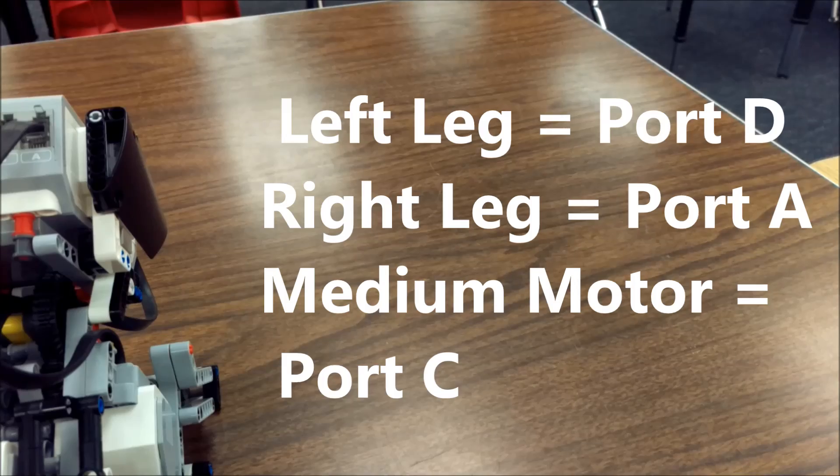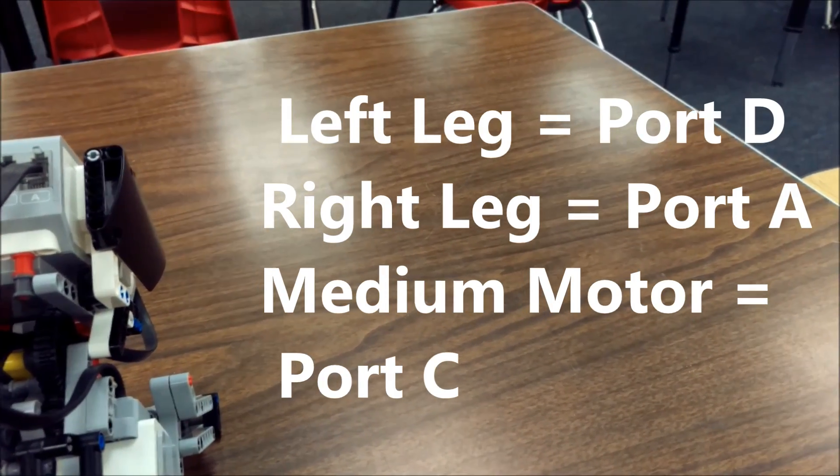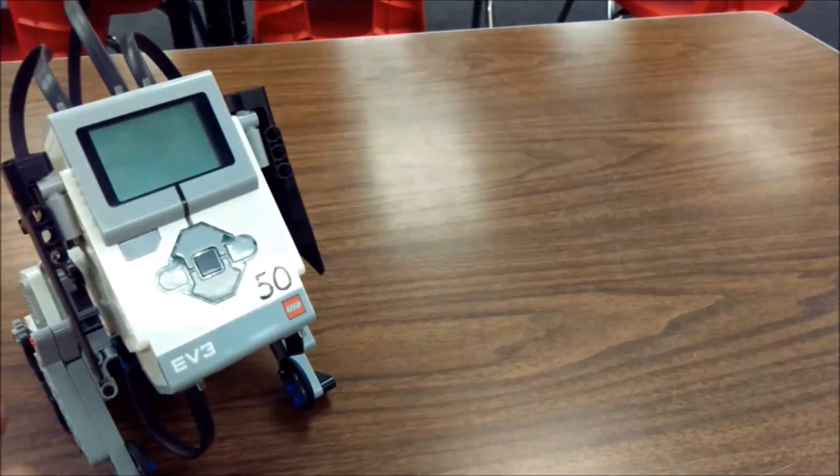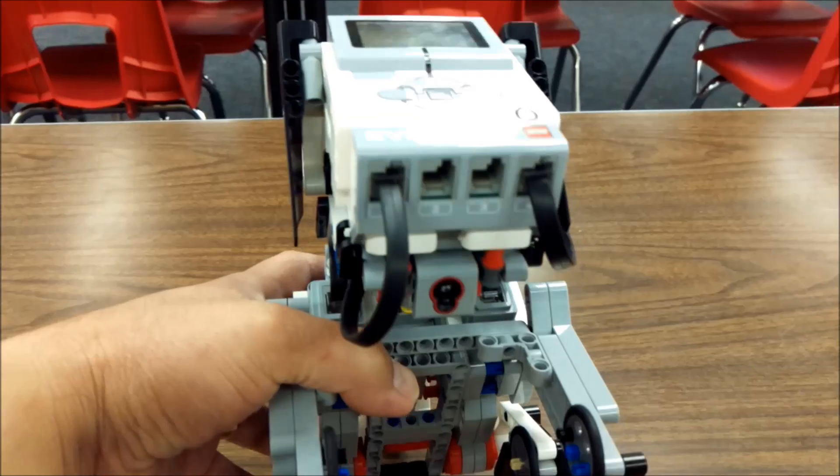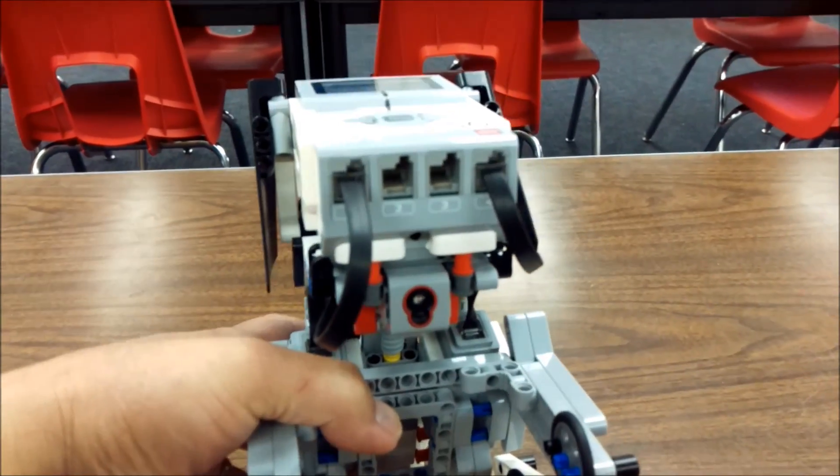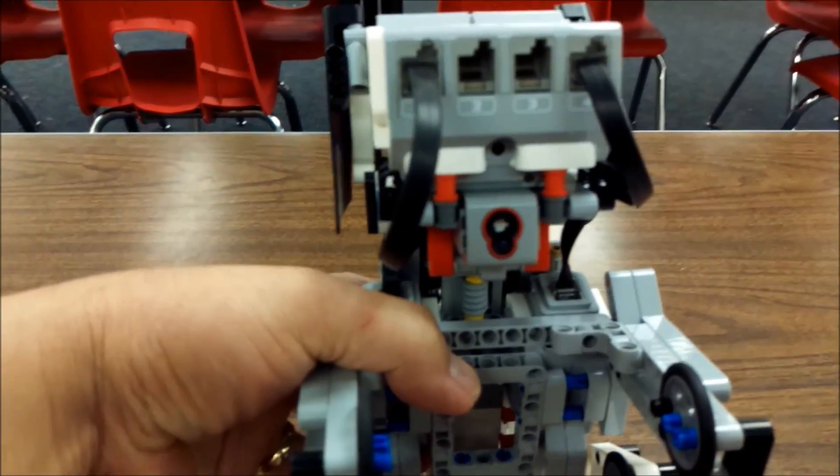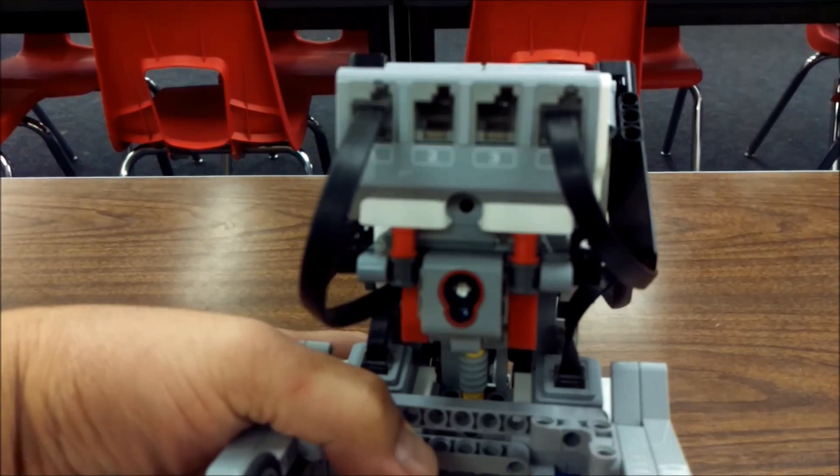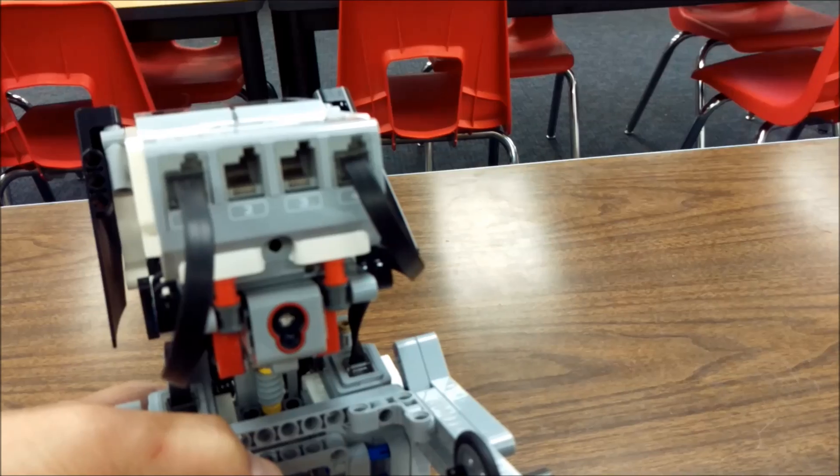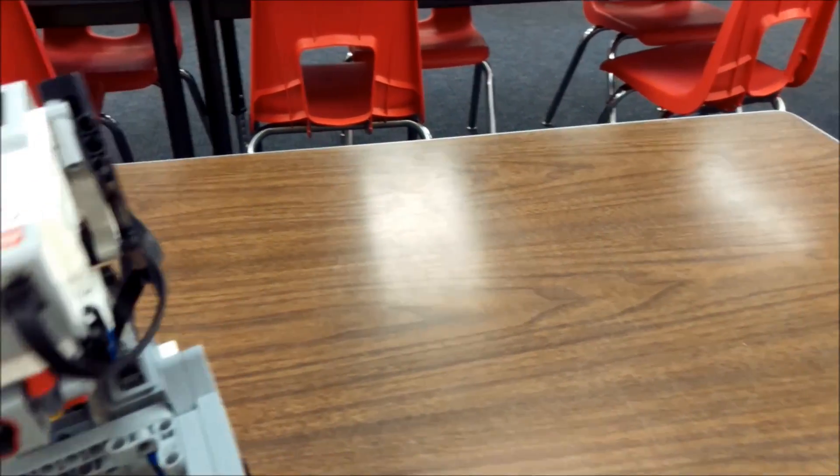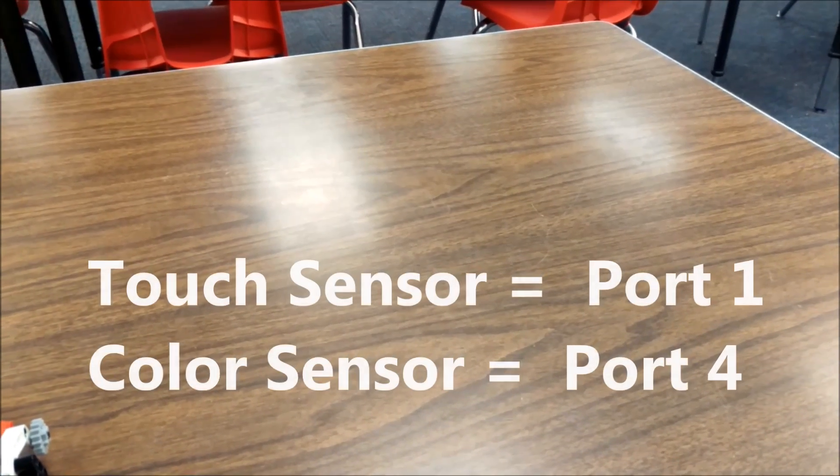Okay, so now let's go to the numbered ports for your sensors. Here we go. The touch sensor is going to go into port one, and your color sensor is going to go into port four.